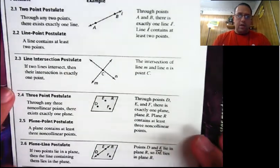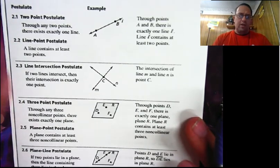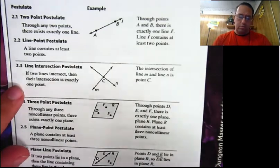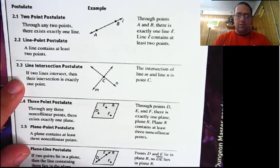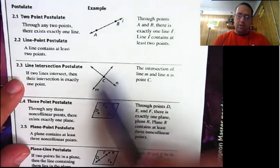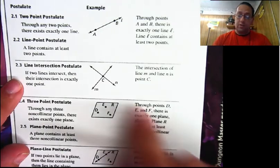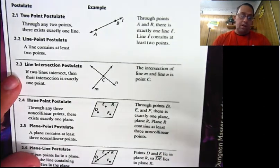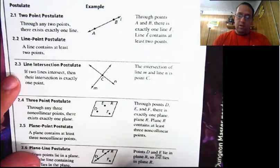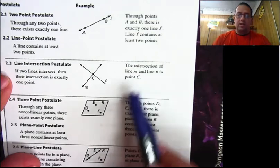Next we have the line-intersection postulate. Don't worry about the numbers — just about every textbook will have these in a different order, so just focus on the title. The line-intersection postulate says if two lines intersect, then their intersection is exactly one point. Two lines will intersect at one point and only one point, because we're on a flat surface, so line N can't curve around and hit line M somewhere else. On a sphere it would, but on a flat surface, that's it. So the intersection of line M and line N is point C.